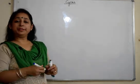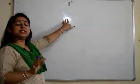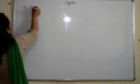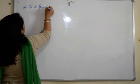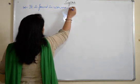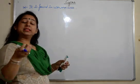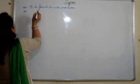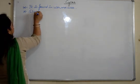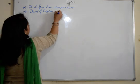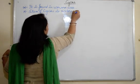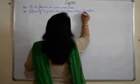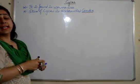Starting with the video: cycas is a gymnosperm and we will start with the general characteristics. It is found in warmer areas, or places with warm climate. The stem of cycas is unbranched and is known as caudex. So if the question comes — what is caudex? — you can say it is the unbranched stem of cycas.